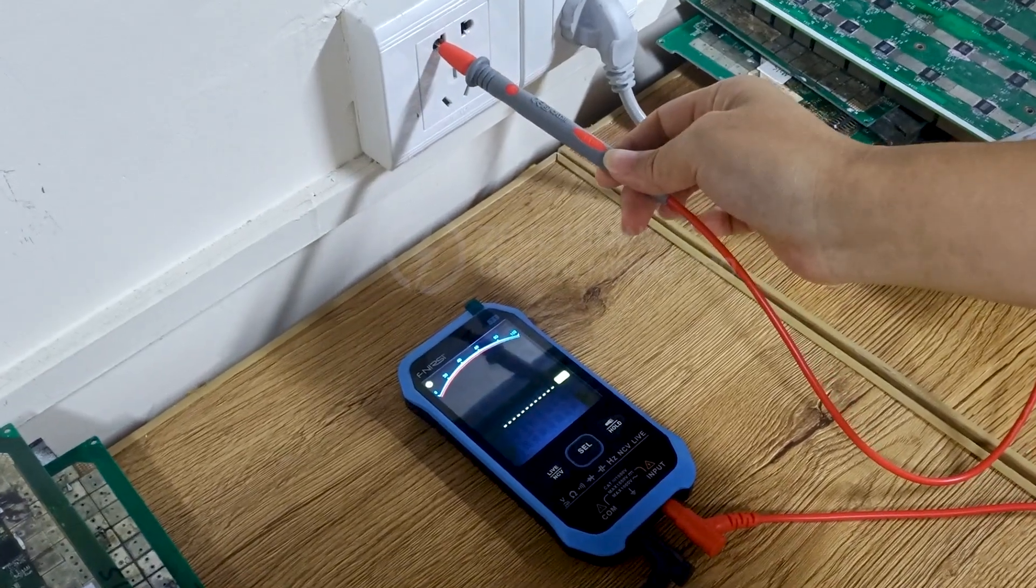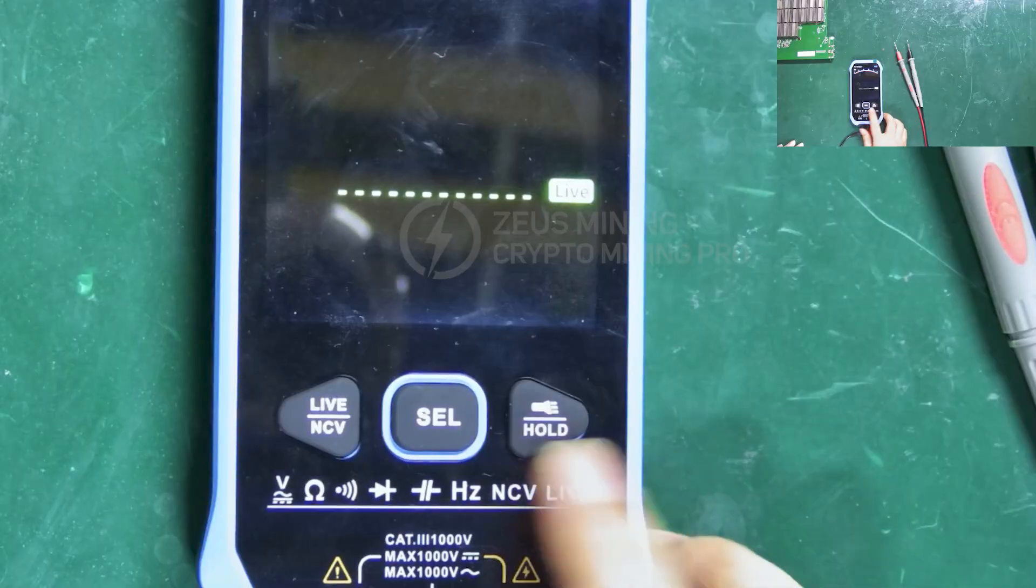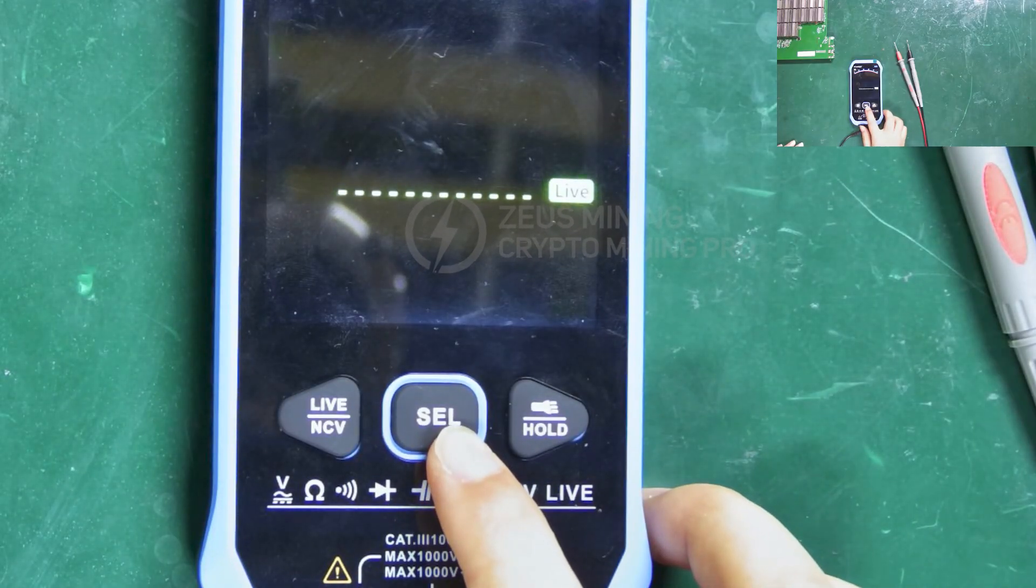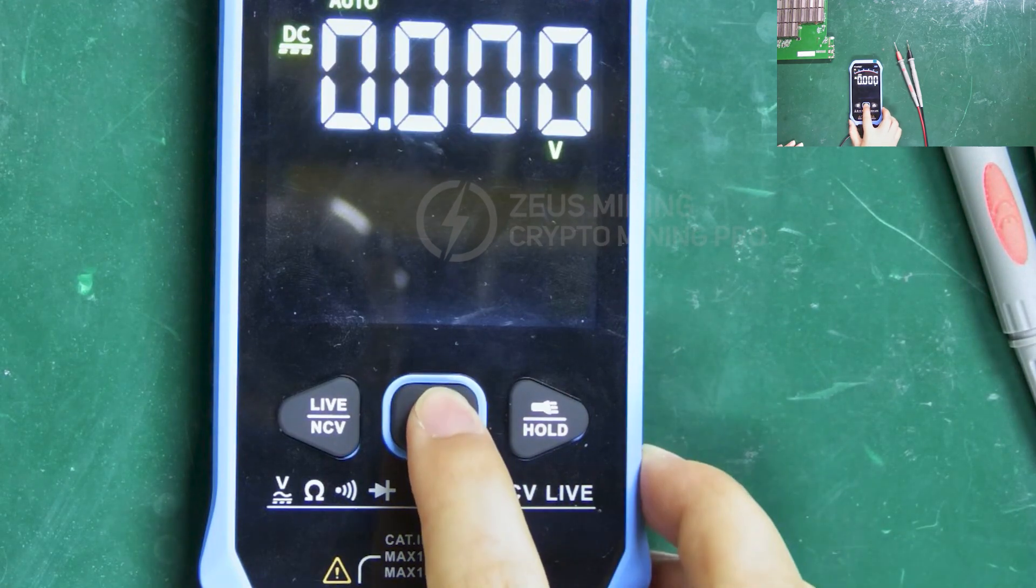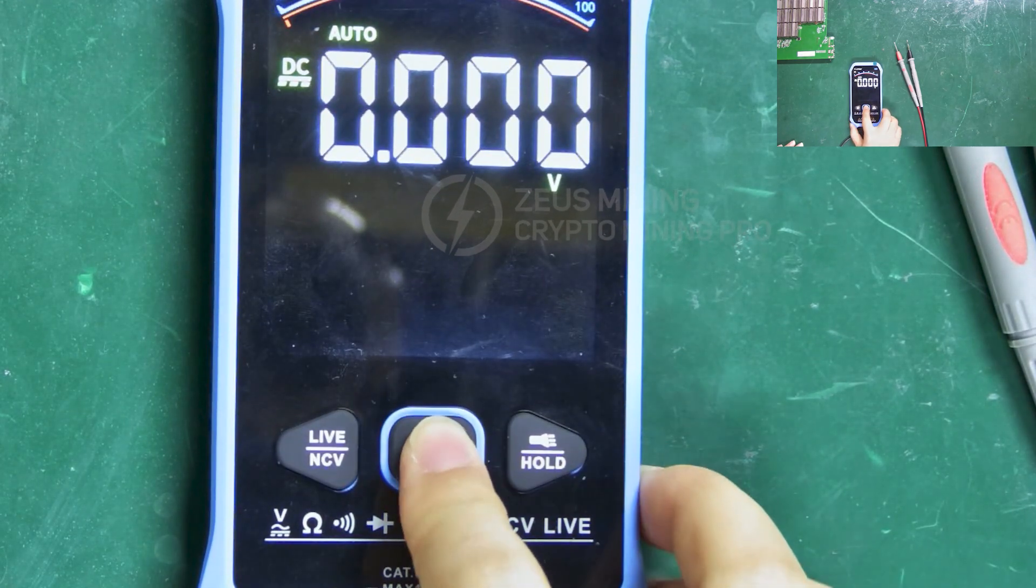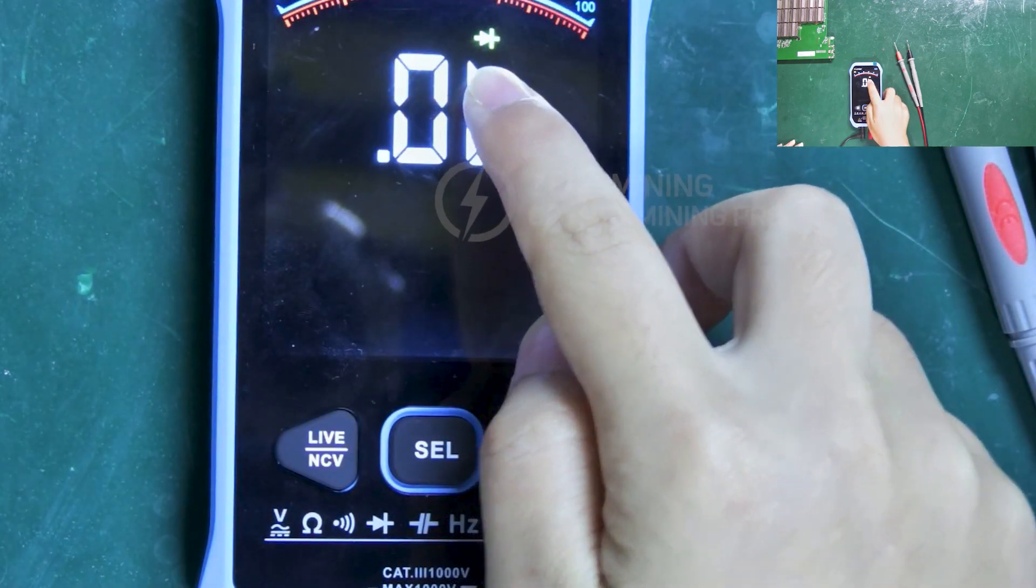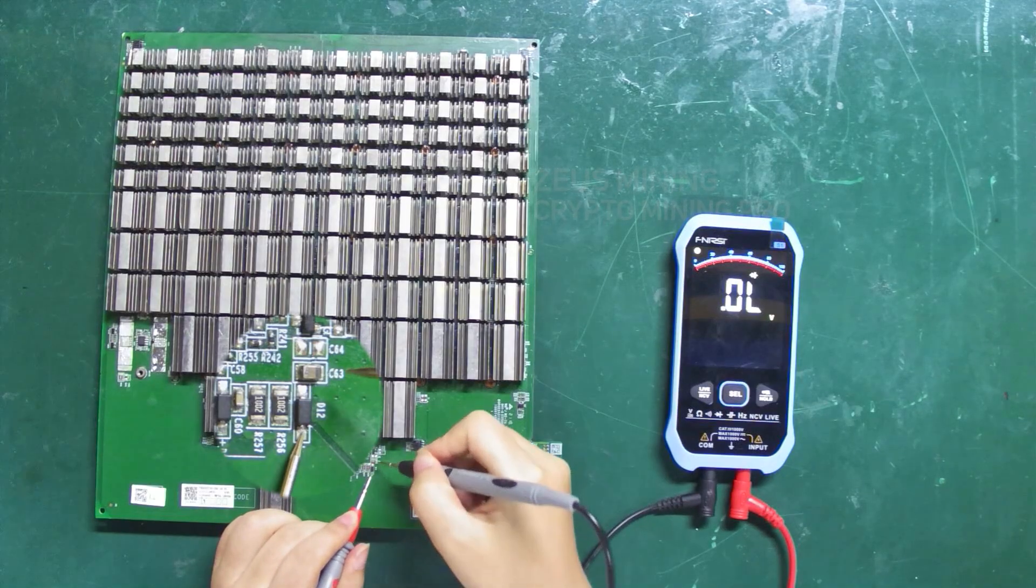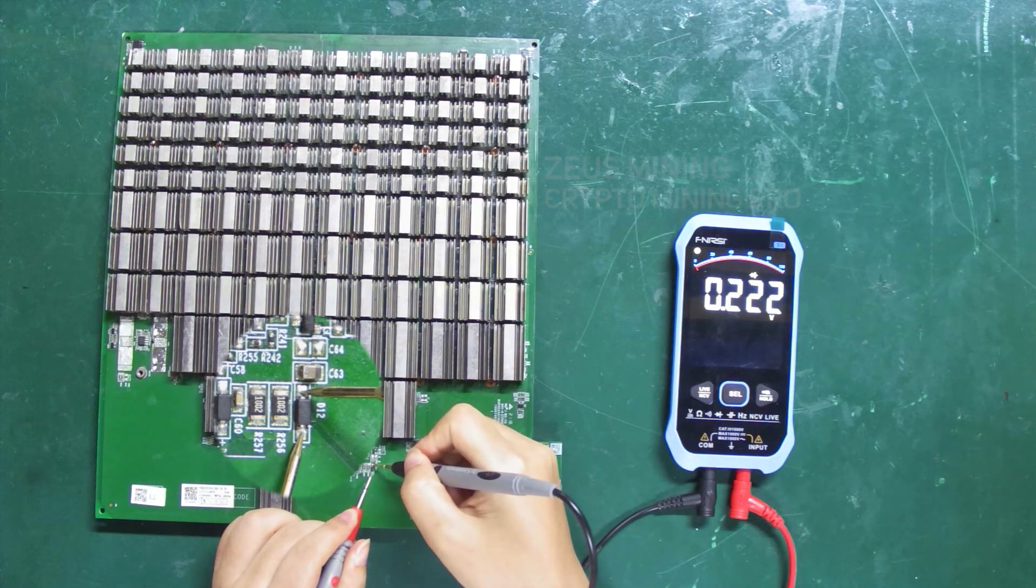The SEL in the middle is the function button and can switch the measurement gears. Now switch to the diode gear, measure diode D12, and we can see its resistance value displayed. Then measure D10, it's an N-channel triode.